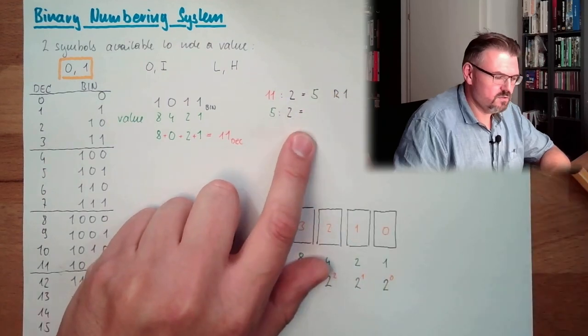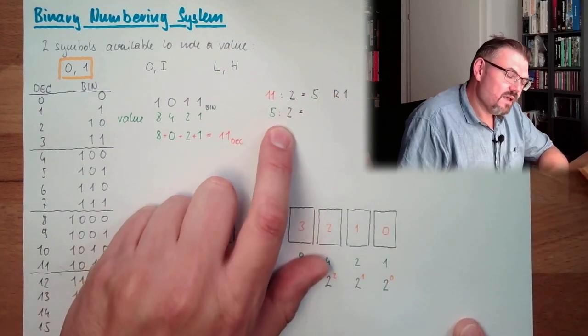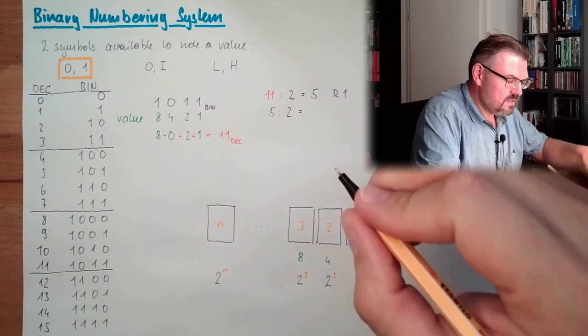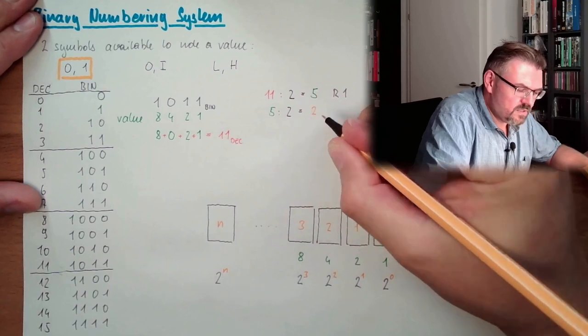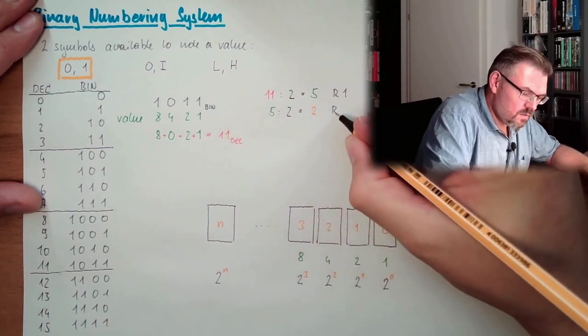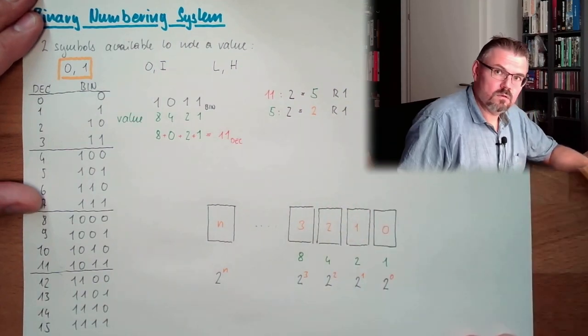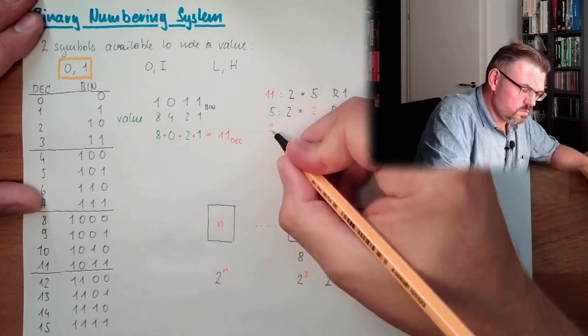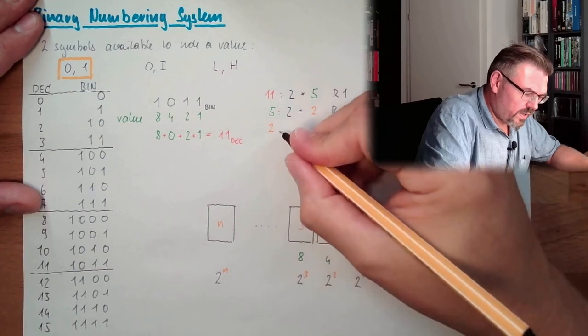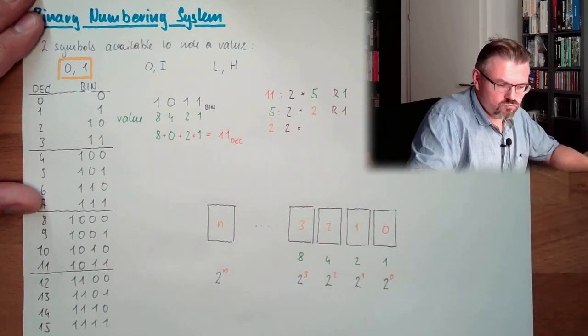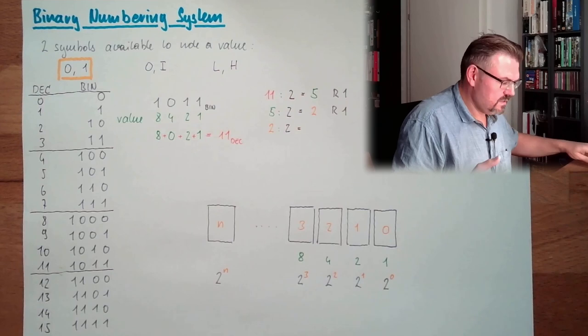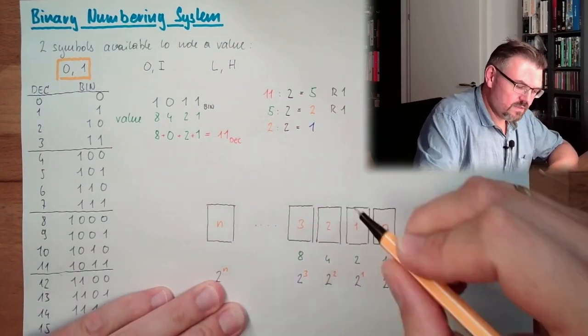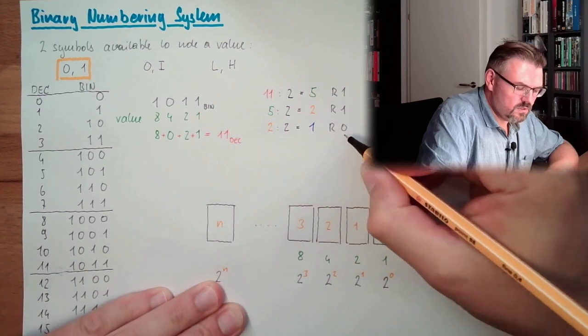Then I take this 5 here, and divide this also by 2, because it's a decimal system. How many times can 2 be placed in 5? Well, it's 2 times, and the rest is also 1. 2 divided by 2 is, well, that's easy, 1 time. And this time the rest of the division is also 0, the remainder.